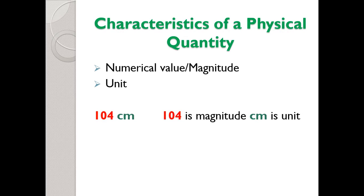Let's discuss an example: 104 centimeters. This is basically a length. The unit here is centimeters (cm), that's why cm is called the unit. So this physical quantity — length — is made up of two parts: magnitude and unit.